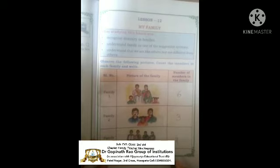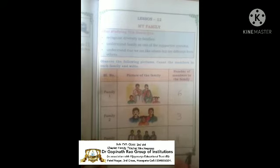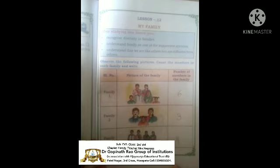Do you understand children? So these pictures are showing the types of the family. In a family there are so many types — large family, big family and small family. So let us learn one by one: large family, big family and small family.